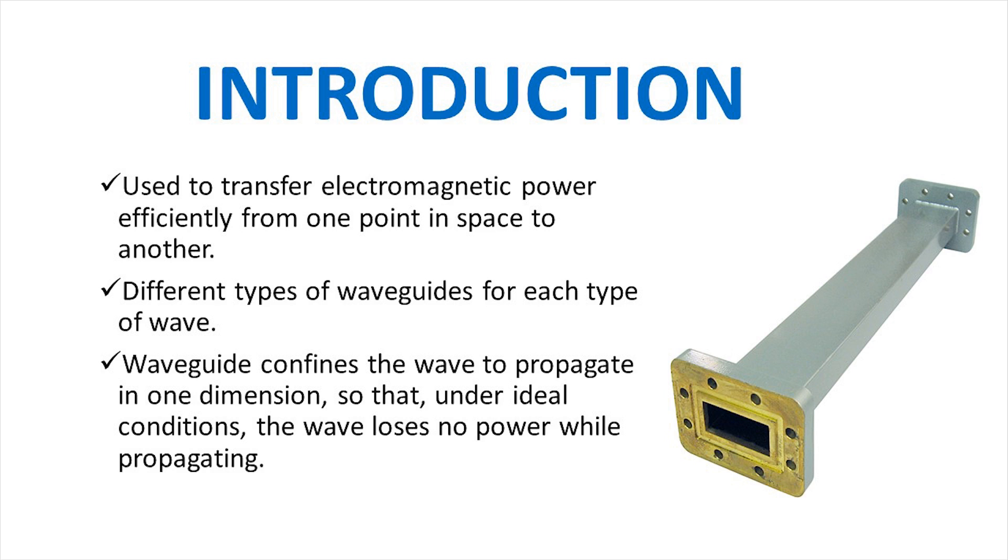Waveguides are a structure that guides waves such as EM waves or sound by restricting expansion to one or two dimensions. Normally waves decrease according to inverse square law as they expand in 3D space, but waveguides apply physical constraints on waves, hence minimizing the loss. Different types of waveguides are used for each type of wave. The original and most common are hollow conductive metal pipes used to carry high-frequency radio waves, particularly microwaves.